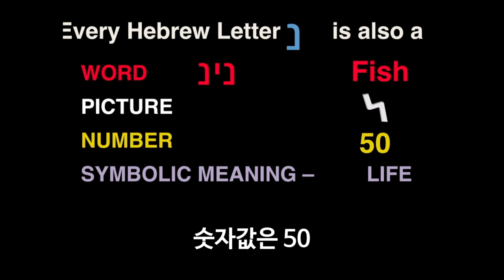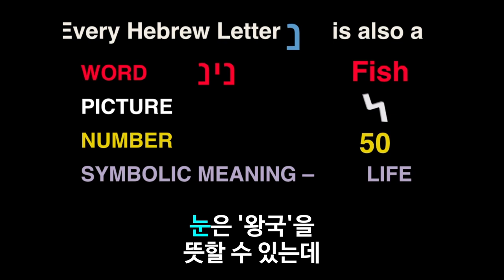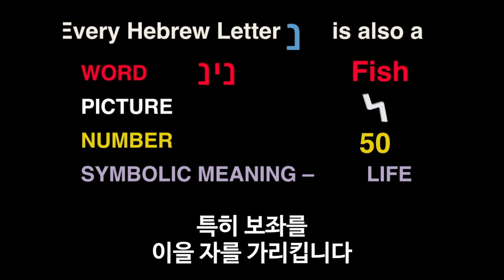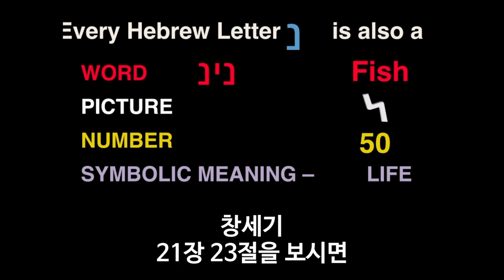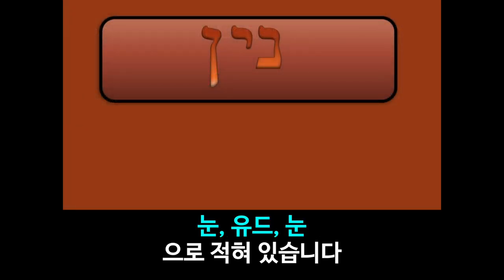It's the number 50, and the symbolic meaning is life. Now, the word Noon can mean a kingdom, and in particular it can imply the heir to the throne. Listen to Genesis 21:23. And here's how the word is spelled — it's Noon, Yud, Noon.